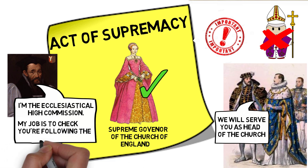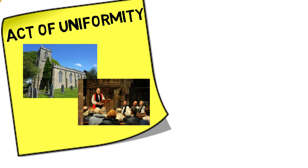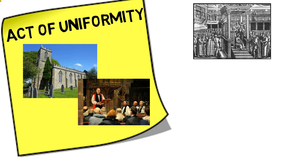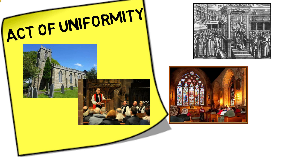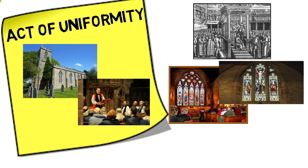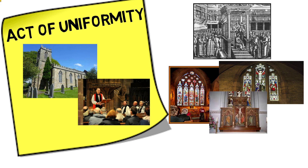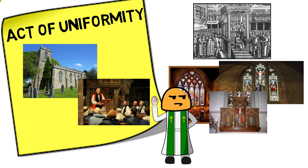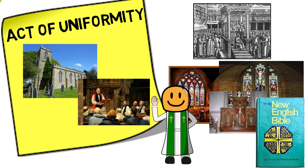If any clergy were failing to follow this, they could be punished. The second part was the Act of Uniformity, which set up the appearance of churches and how religious services were to be held. It required everybody to attend church, and it laid out what churches should look like. Unlike Protestant churches, Elizabeth wanted her churches to remain really decorative.